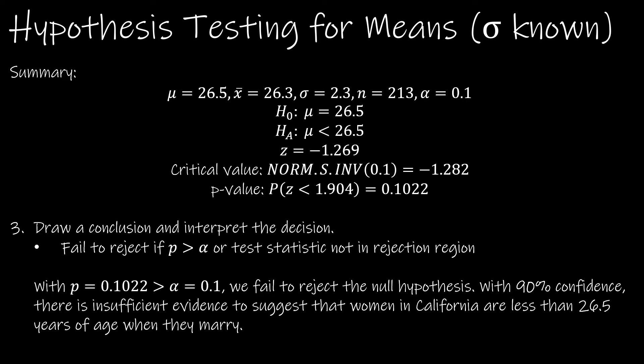The really important part, then, is to say what that means. With 90% confidence, or you can say with a 0.1 level of significance, there is insufficient evidence. Remember, if we fail to reject, there's always insufficient evidence that this is true. But we always talk about the alternative. So there's either sufficient evidence, if we reject, or insufficient. Here we have insufficient evidence that the women in California are less than 26.5 years when they marry.